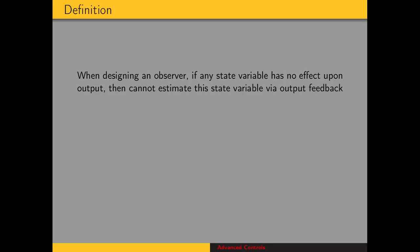When we're designing an observer, if there is a state variable, one or more state variables, that has no effect upon the output, then we cannot estimate the state variable via output feedback.